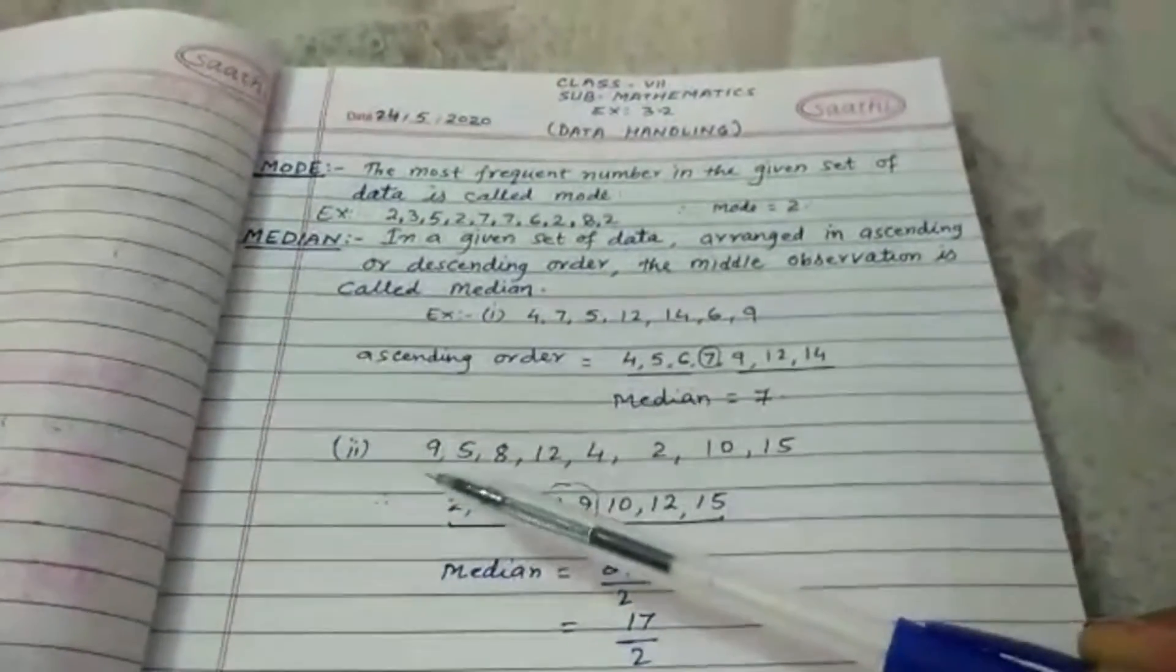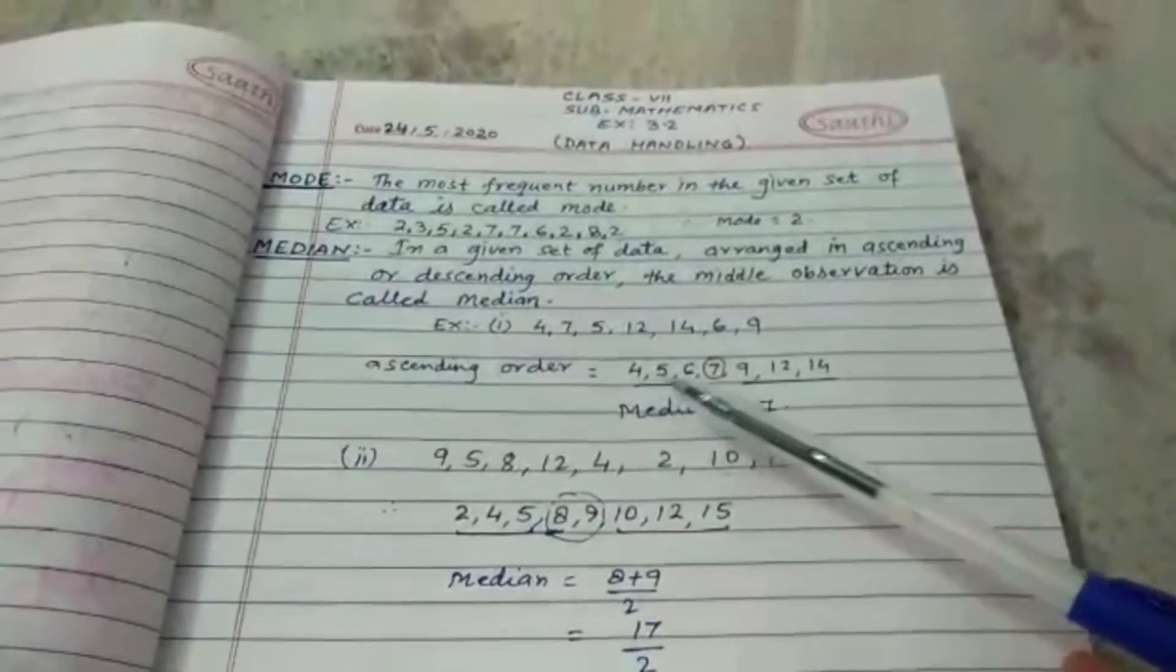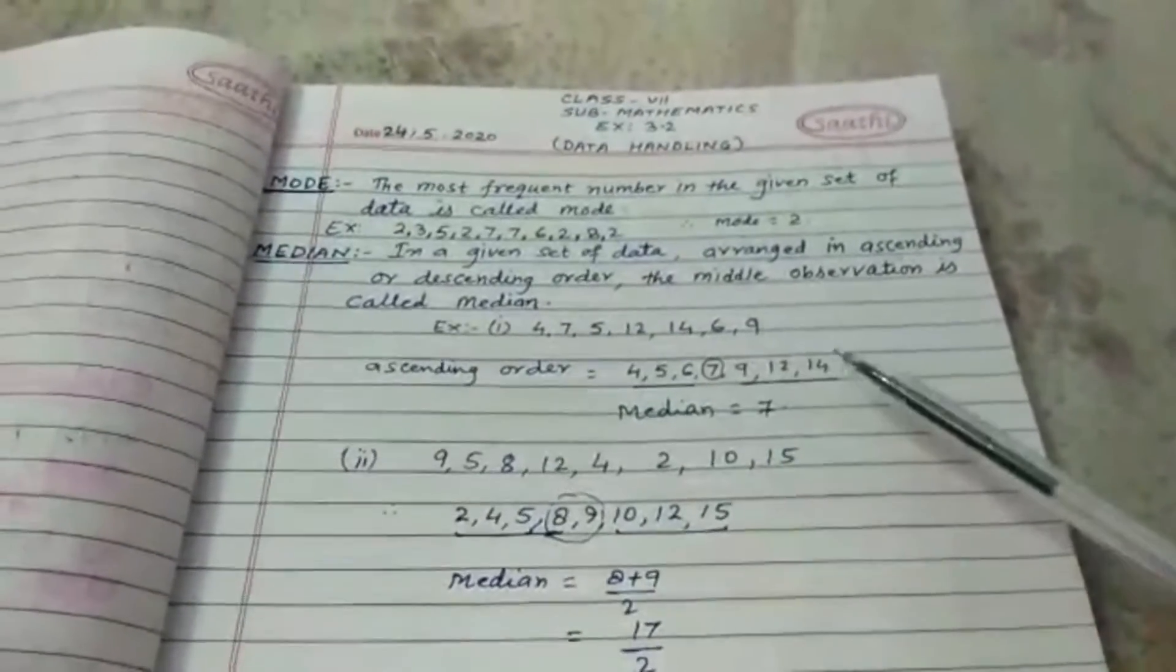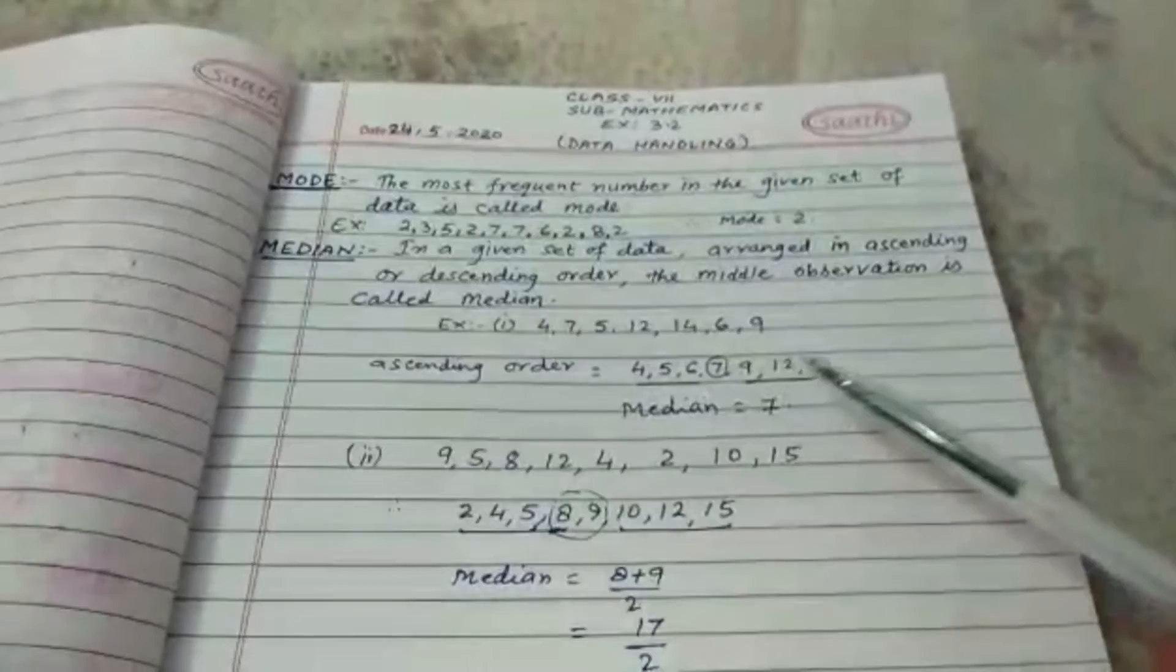Now the second case. Here the number of terms are odd: 1, 2, 3, 4, 5, 6, 7. Here the number of terms are odd.